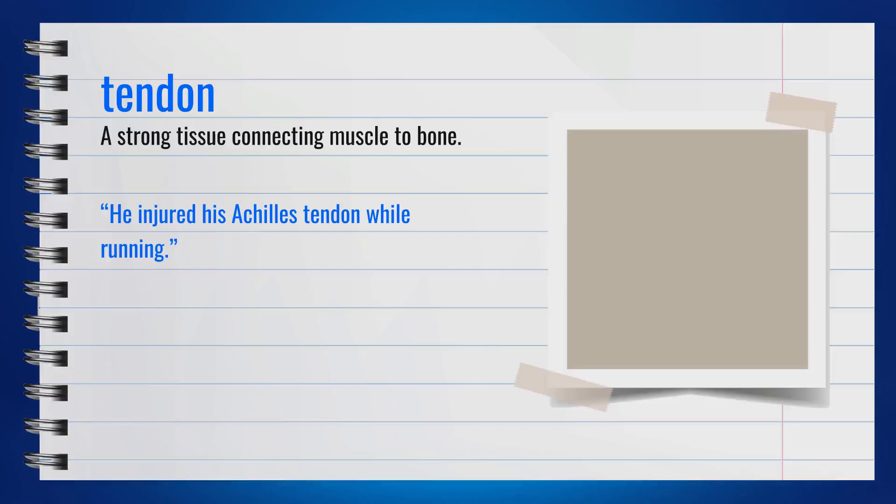The word tendon is a noun, spelled T-E-N-D-O-N. It is a strong tissue that connects muscle to bone. A synonym for tendon is sinew. For example, he injured his Achilles tendon while running. In summary, tendon refers to the tissue that connects muscles to bones.